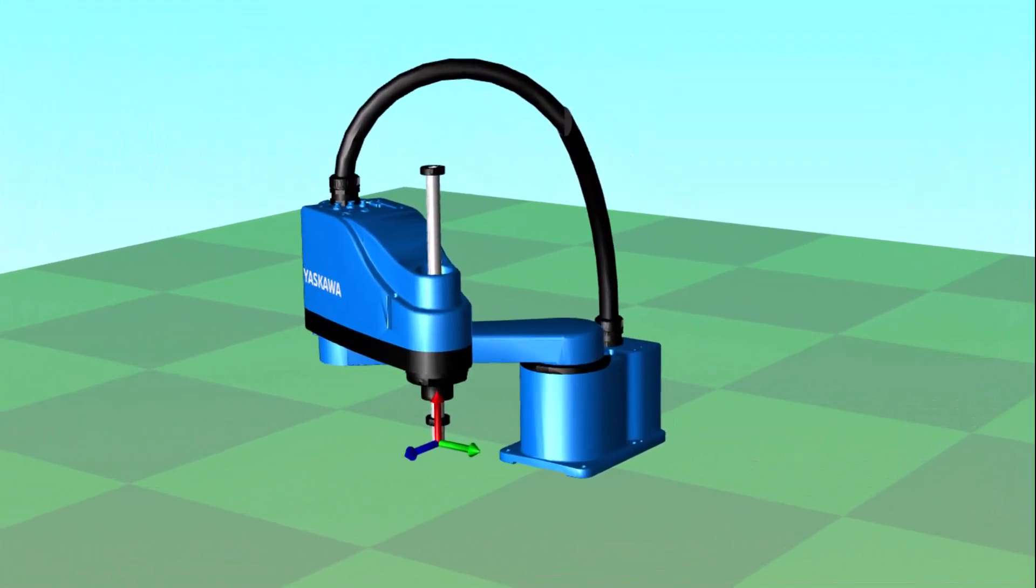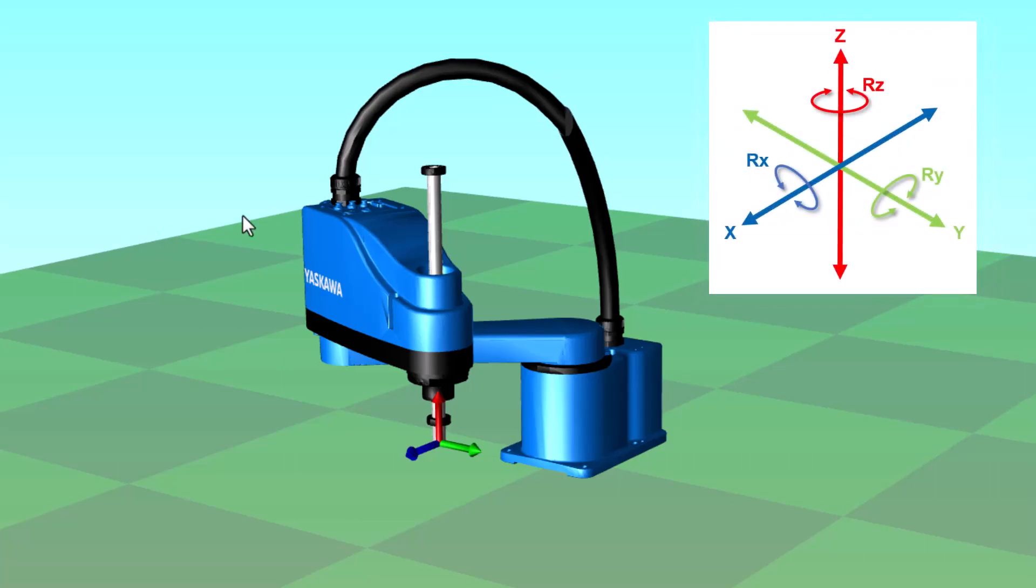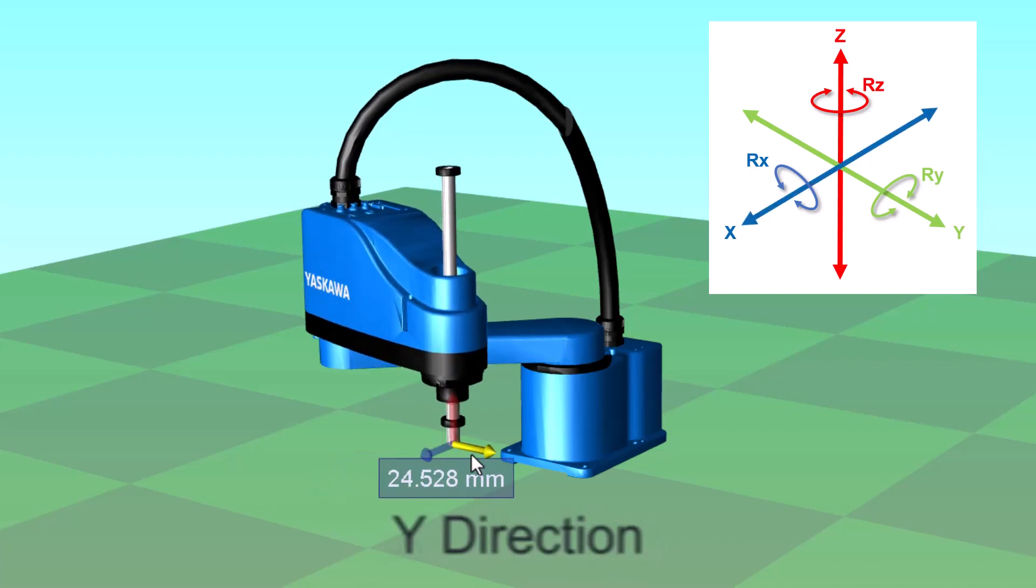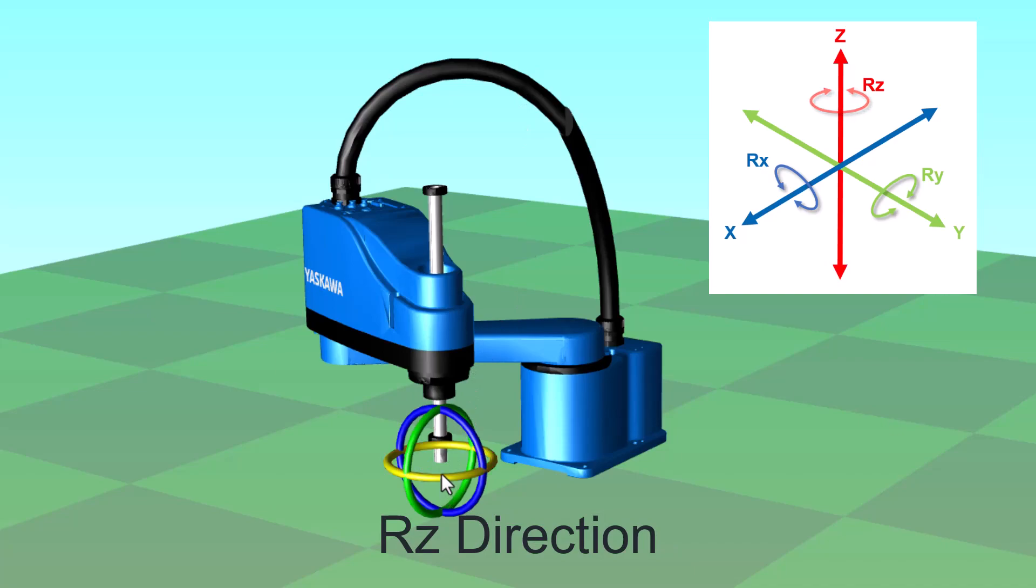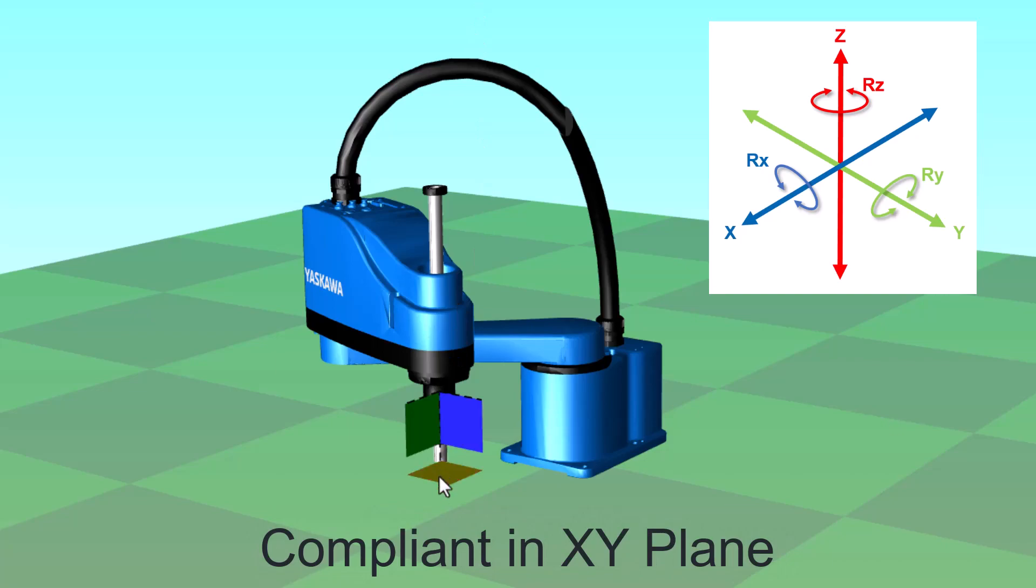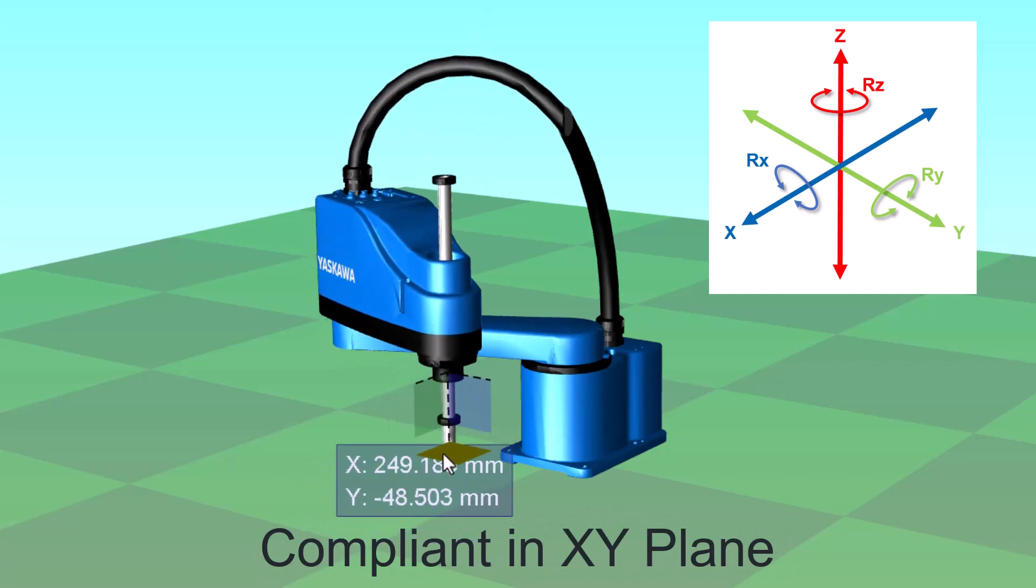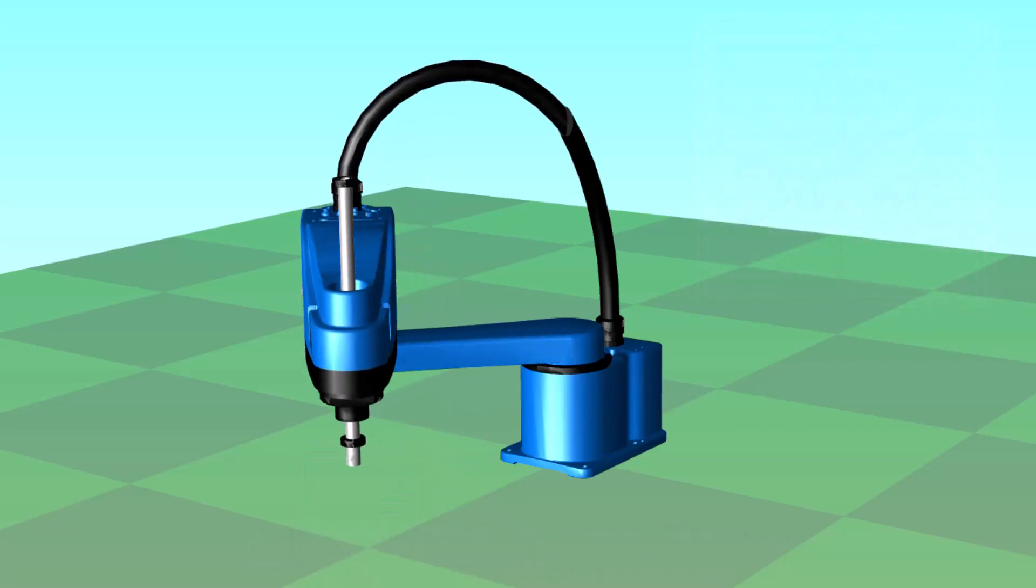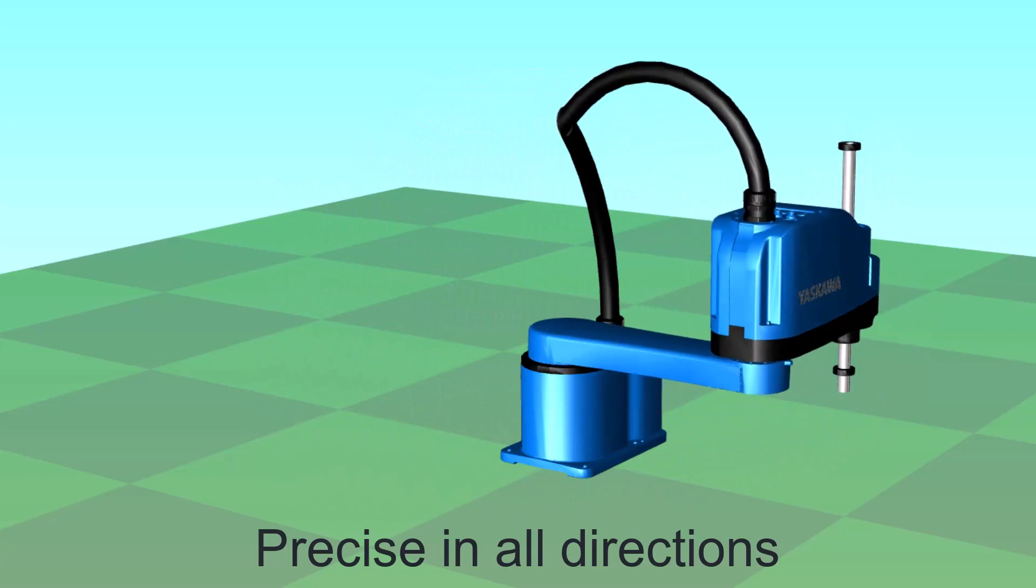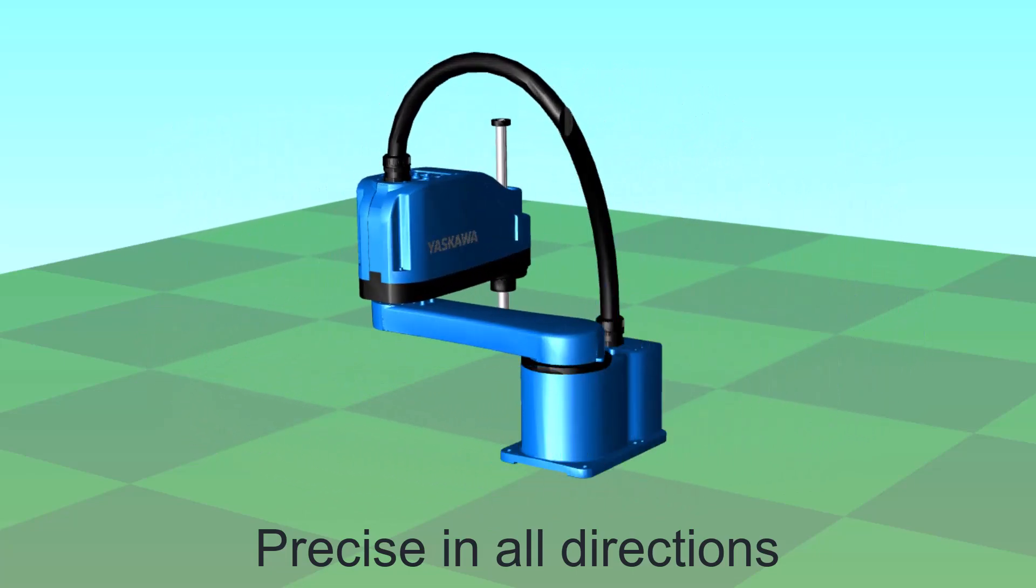In this 3D model, you can see that motion of the tool is possible in 3 dimensions: X, Y, Z, and a 4th dimension which is rotation about the vertical Z axis. The robot is mechanically compliant in the XY plane and rigid in the Z direction. It's precise in all directions: X, Y, Z, and RZ.